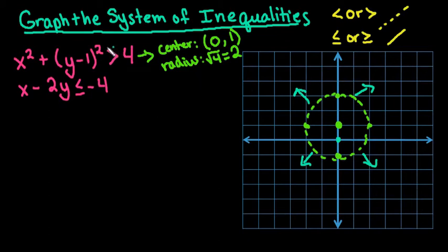The other way is just to know what greater than means. So we're looking for all values that are on the outside of that radius.